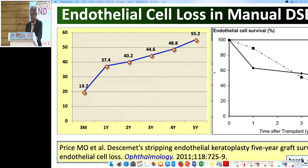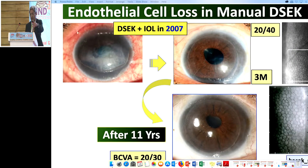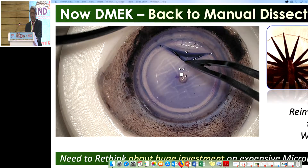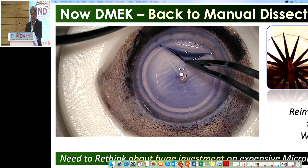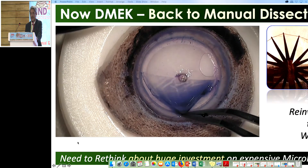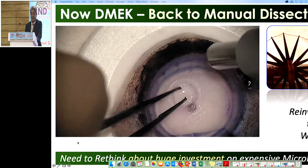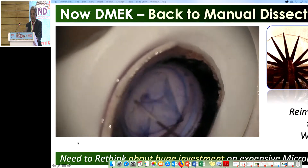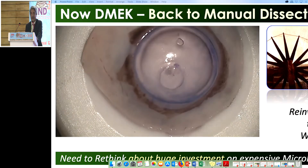We have compiled our data, and less than 1% of cases require replacement with a new cornea. We compared our results going back to 2007 — one patient is doing very well even after 11 years. Endothelial cell loss is similar between manual and automated. We are now coming back to manual — reinventing the wheel, because nowadays DMEK is essentially manual dissection.